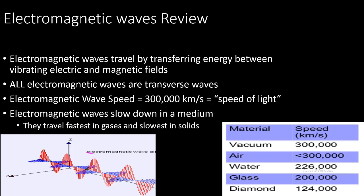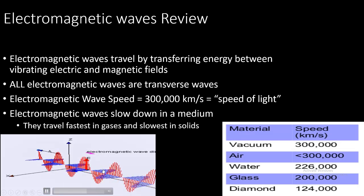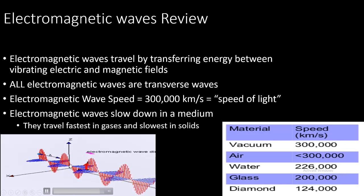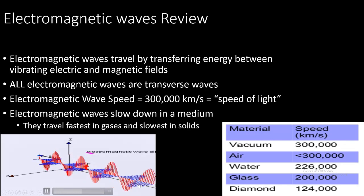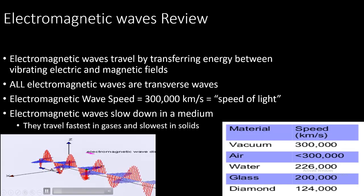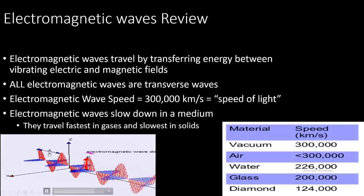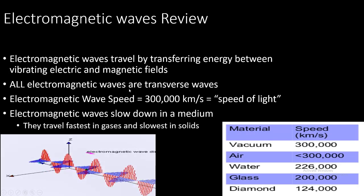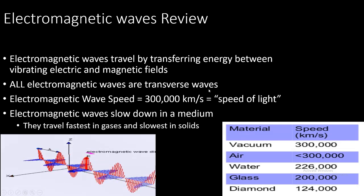So let's do a review of electromagnetic waves, which we've covered in a previous video. Electromagnetic waves travel by transferring energy between vibrating electric and magnetic fields. If you take a look at the animation below, the vibrating electric and magnetic fields carry energy with them as they travel, and they move perpendicular to the medium, which means they travel at right angles to the medium. All electromagnetic waves are transverse waves.